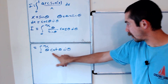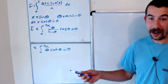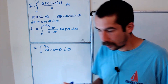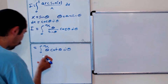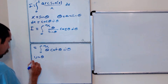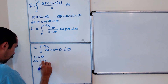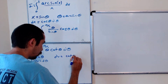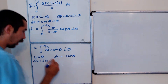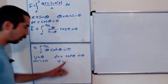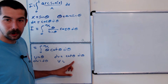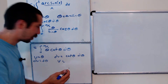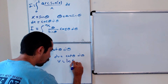We have a product: theta times cotangent of theta d theta. So a good idea would be to use integration by parts. Let's have u be theta, so du is d theta. And dv is equal to cotangent of theta d theta. Then v is the natural log of sine of theta.